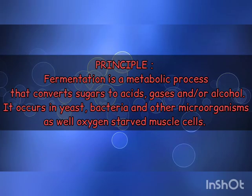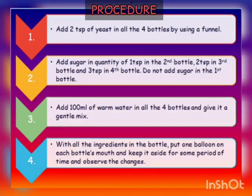Fermentation is a metabolic process that converts sugars to acids, gases, and alcohol. It occurs in yeast, bacteria, and other microorganisms, as well as oxygen-starved muscle cells. There are 4 steps to be followed in the procedure.